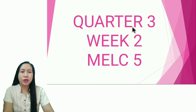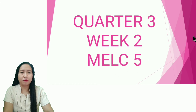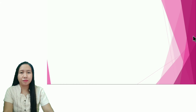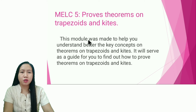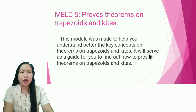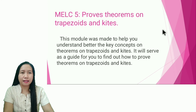We now move on to Quarter 3, Week 2 — Module Number 5. In Module Number 5, we're going to prove theorems on trapezoids and kites. This module was made to help you understand better the key concepts on theorems on trapezoids and kites, and will serve as a guide for how to prove these theorems.